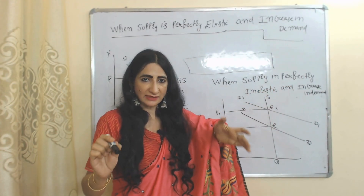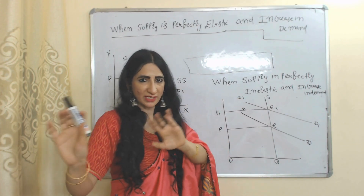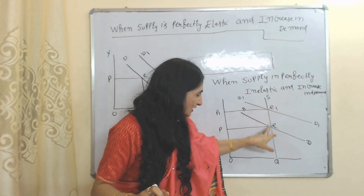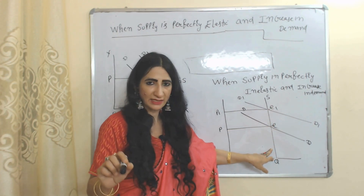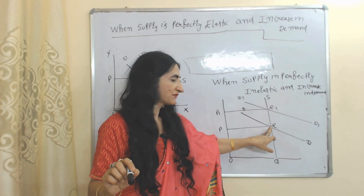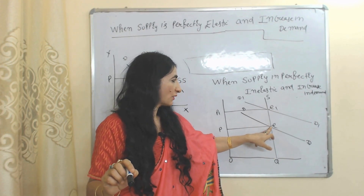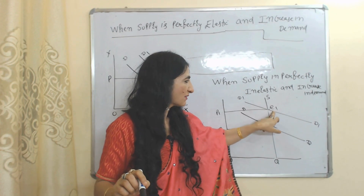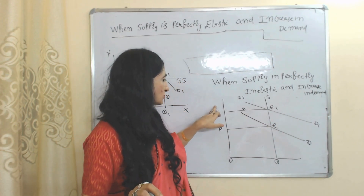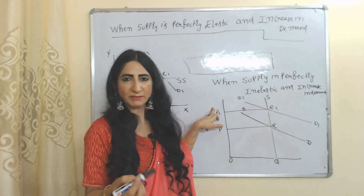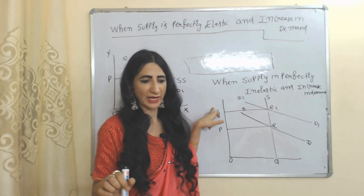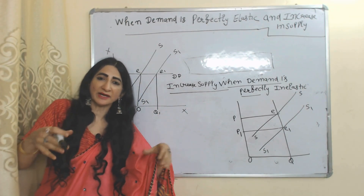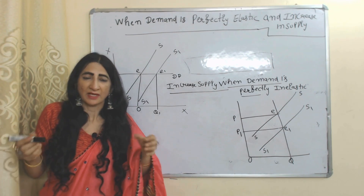Next is when supply is perfectly inelastic and demand increases. Perfectly inelastic supply means producers cannot change supply. Here you can see the initial equilibrium point is E. This vertical line shows perfectly inelastic supply. The new equilibrium point is E1. At the new equilibrium point, as demand increases, price also increases from P to P1 because producers cannot change supply. Next: increase in supply when demand is perfectly elastic. In such a case, price will remain constant — when demand can change to any extent, increase in supply will not affect price.